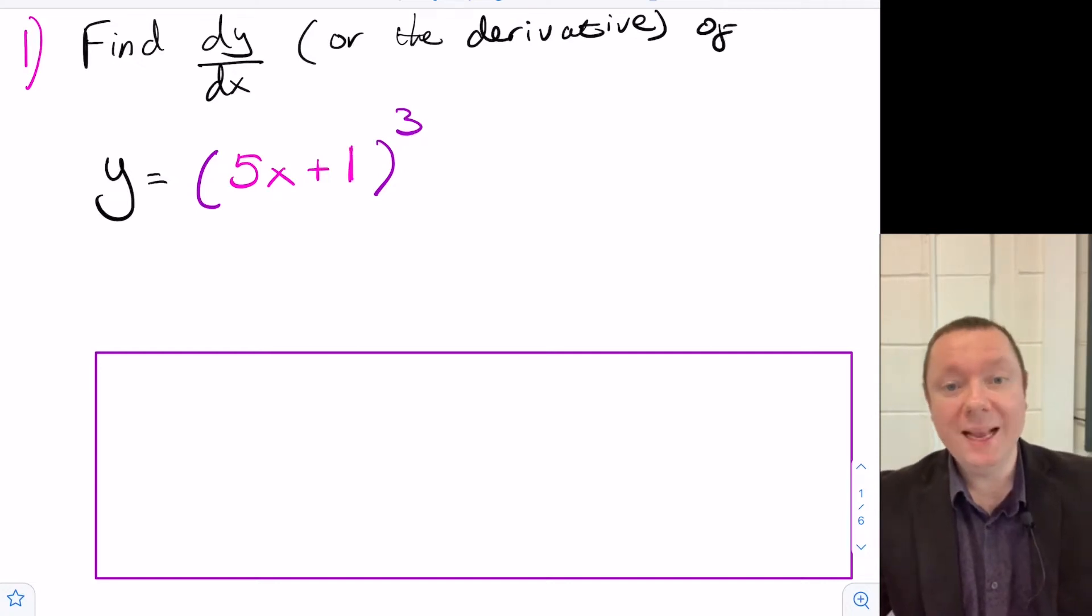That's the Client here from ClientMaths. Today we're going to do a deep dive into the chain rule. Let's jump straight in. Find dy/dx or derivative of, and we've got y equals 5x plus 1 all cubed.